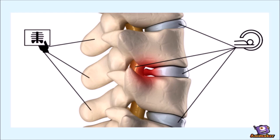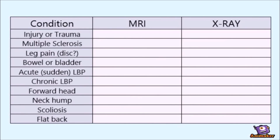So which imaging modality is the best fit for each condition? For injury or trauma, which usually involves blood and inflammation — fluids — MRI. For multiple sclerosis, that disease is a neurological disease and deals with nerves and myelin, the sheath that covers those nerves. Again, soft bits — MRI.